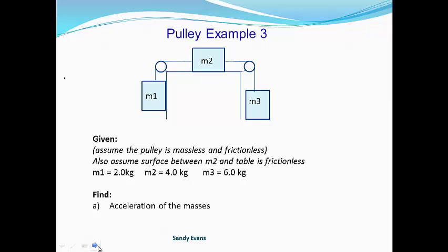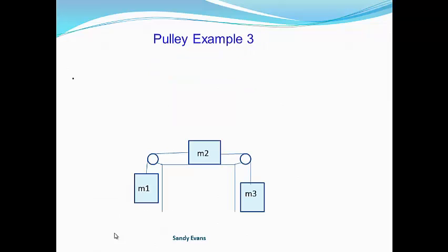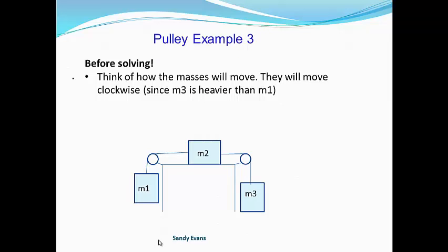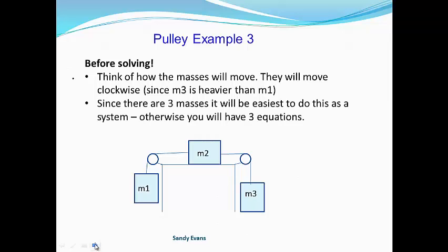Here are our givens. Notice that mass 3 is 6 kilograms and mass 1 is only 2. We're going to find the acceleration of the masses and the magnitude of tension in both strings. Which way will it move? It's going to move clockwise, since mass 3 is heavier than mass 1. Since there are three masses, this problem will be much easier to do as a system.